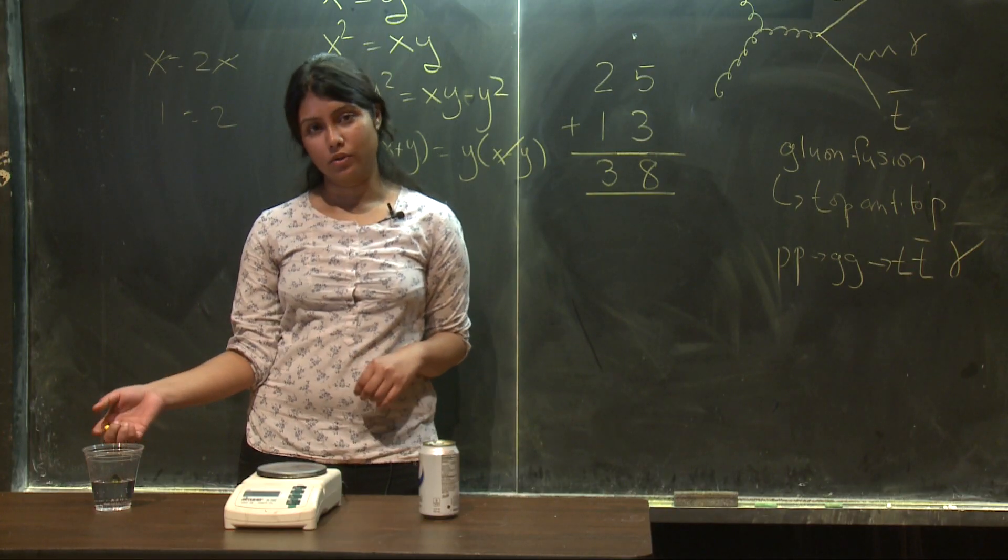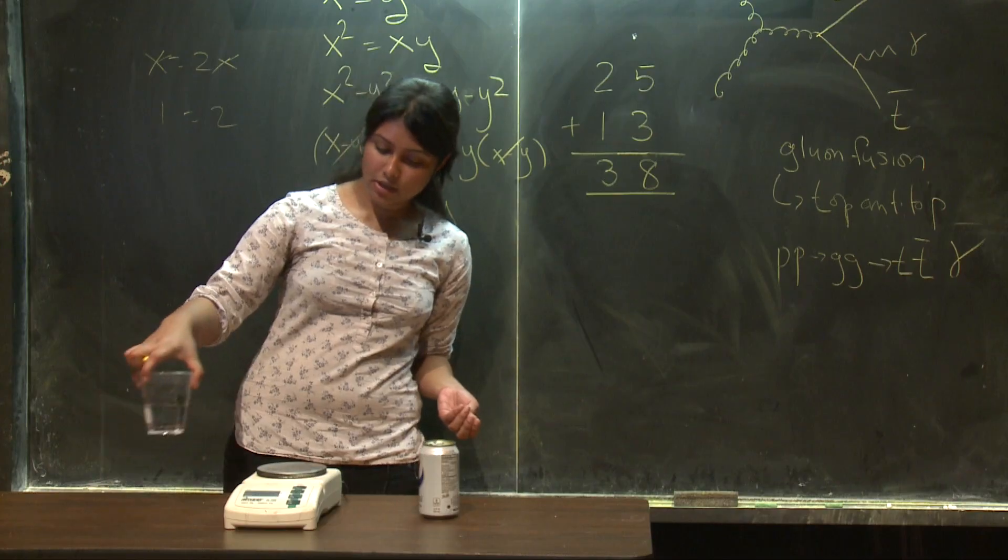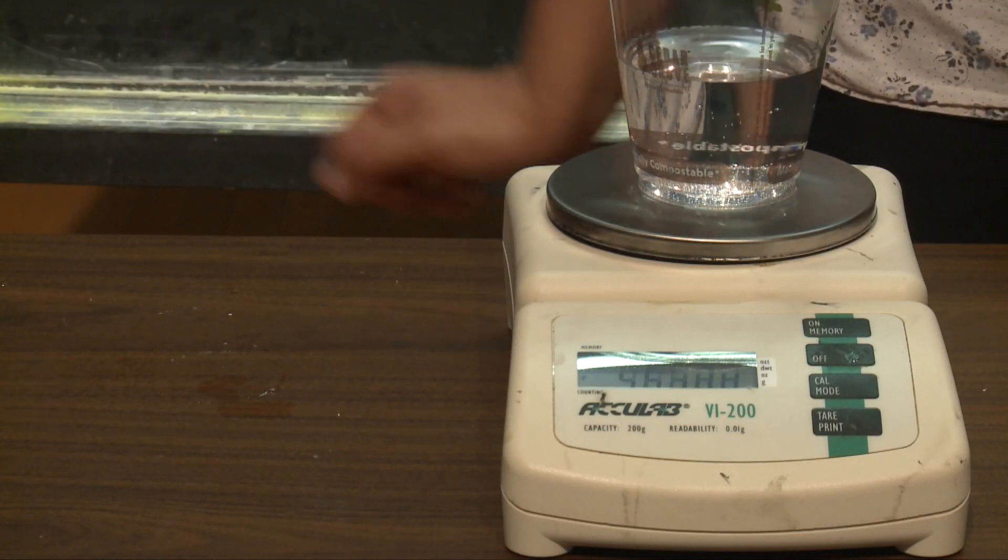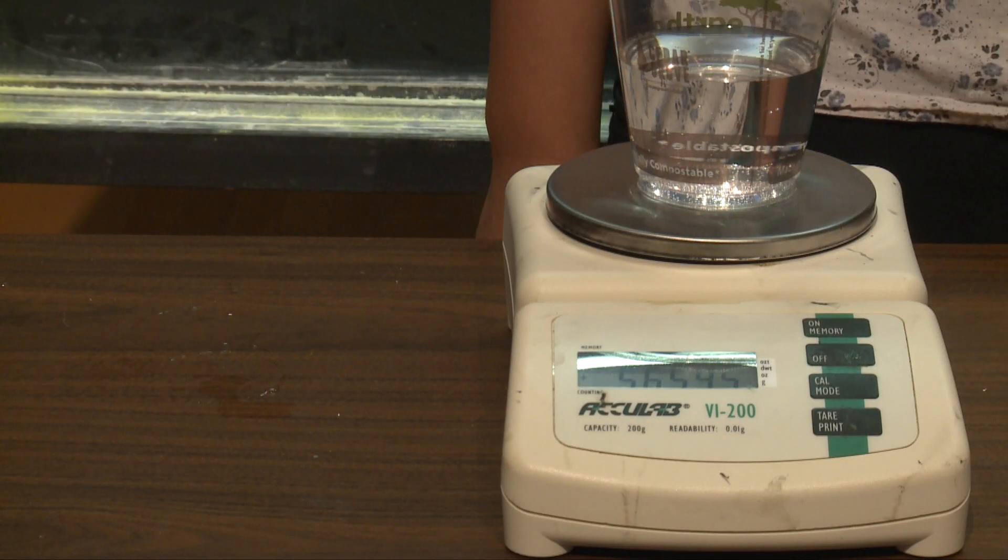What about the glass of water though? I don't know how much it weighs. I don't know if I need more or less. So I can put it on a digital scale and it will tell me that it weighs about 5.6 ounces.